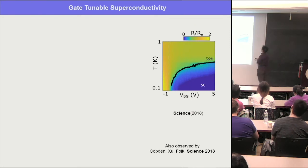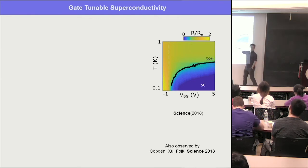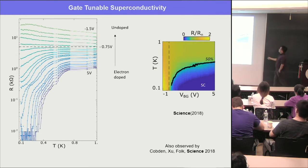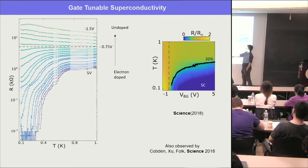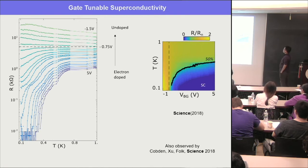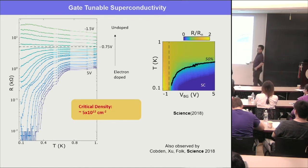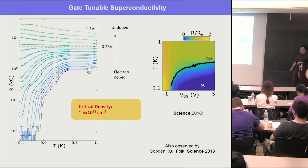The resistance data as a function of temperature and gate voltage shows: at highly doped range, resistance drops to zero — superconductivity. Applying gate moves the system to the topological insulating state. The critical carrier density at the superconductor onset is close to 5 × 10¹² cm⁻². So adding carrier density on the order of 10¹² gives you superconductivity. This is one strange thing about this superconductivity.